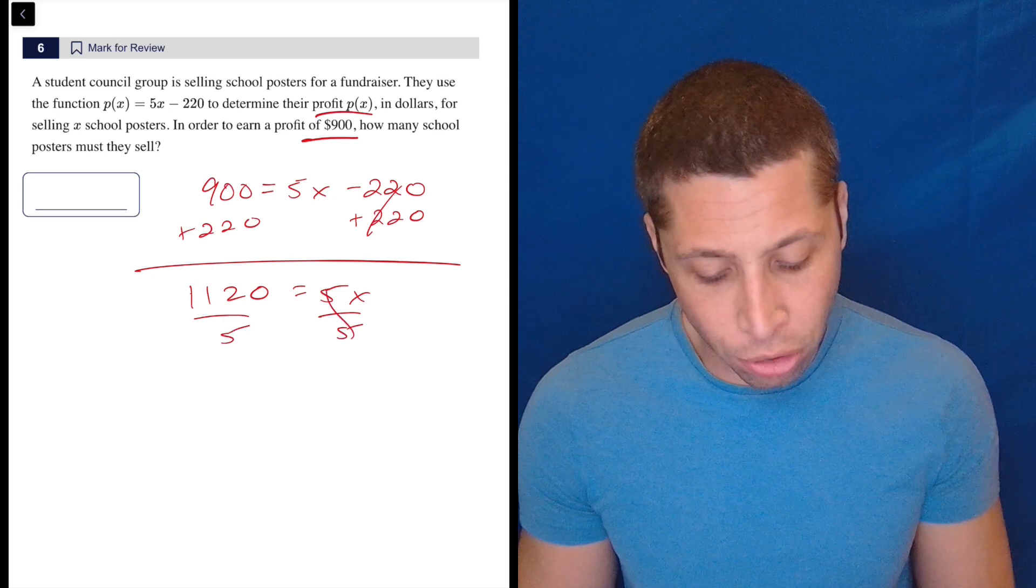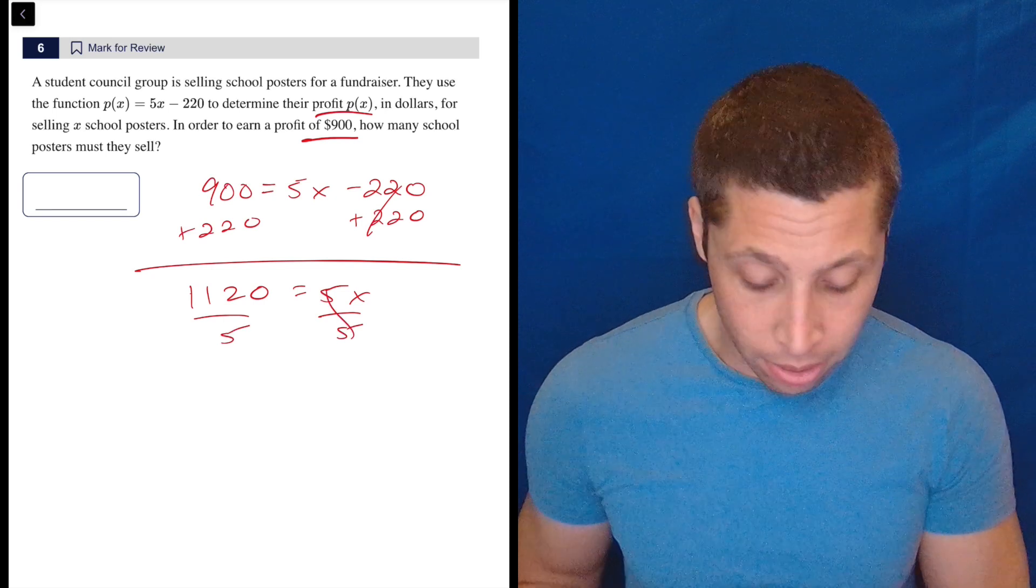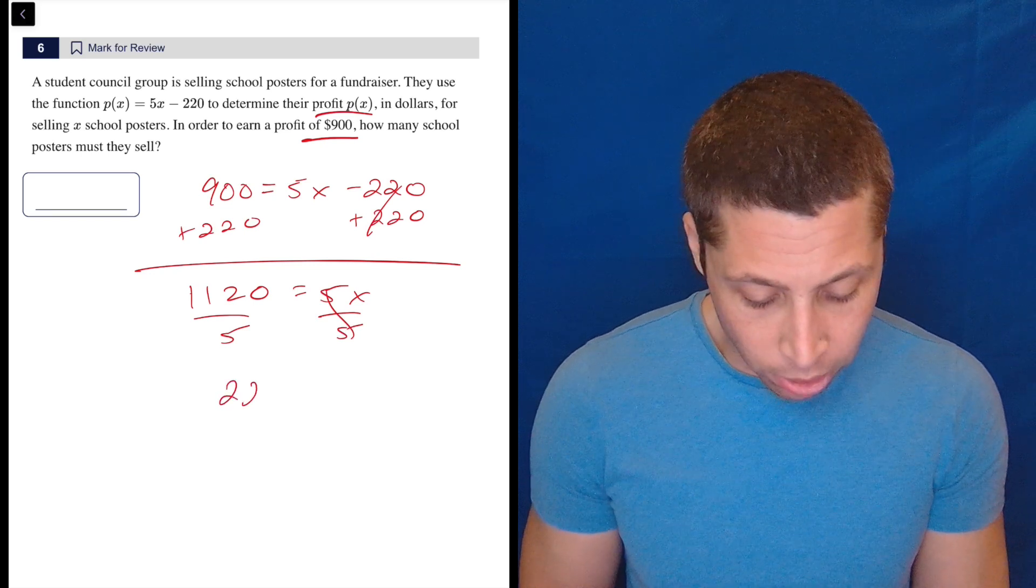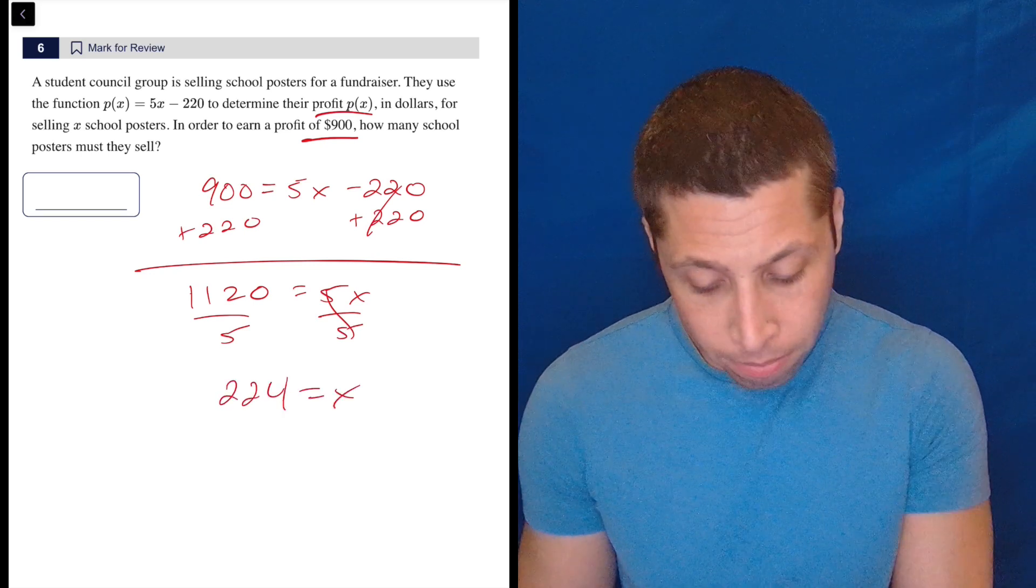Then we divide by 5 to cancel out the multiplication, and now I'm going to go to the calculator. 1120 divided by 5 is 224, and that's it.